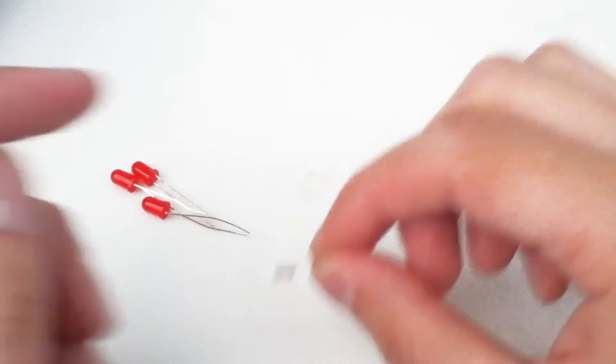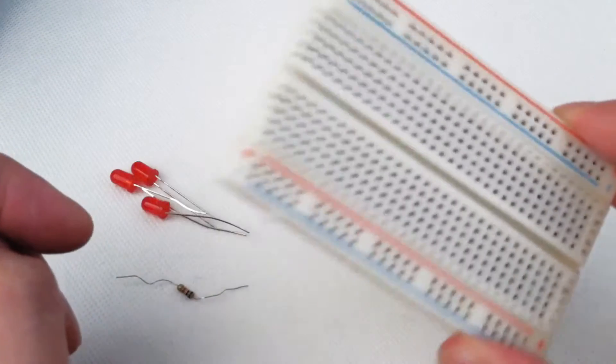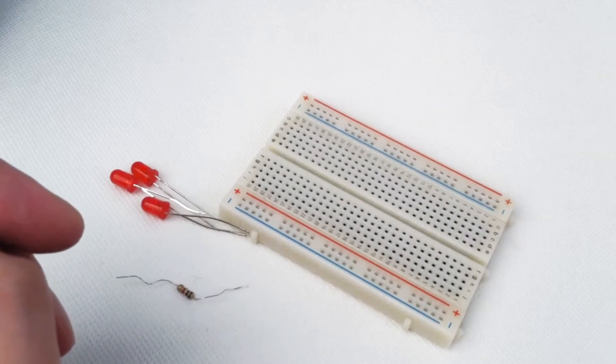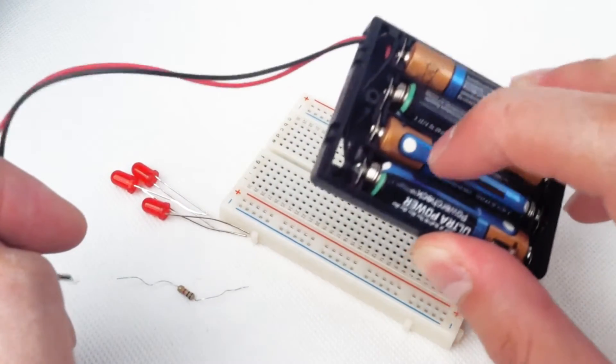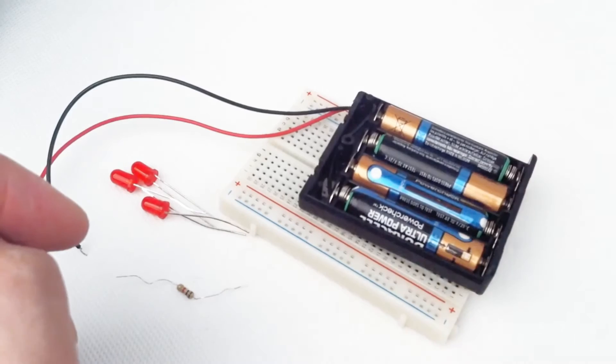Brown and black red are the colours. Our breadboard 400 point, a power supply given by 4 AAA batteries in a 4 AAA battery holder.